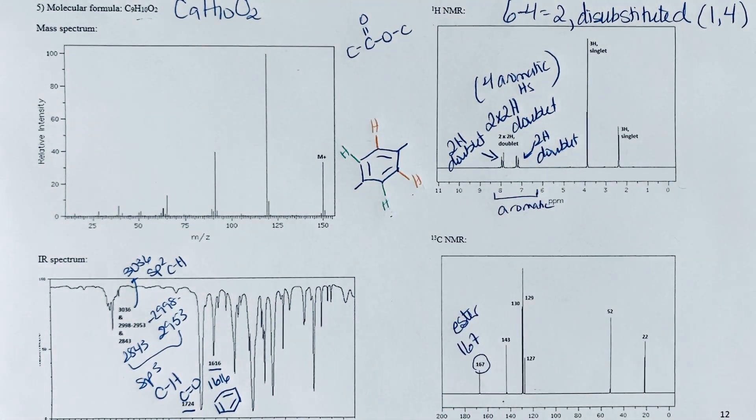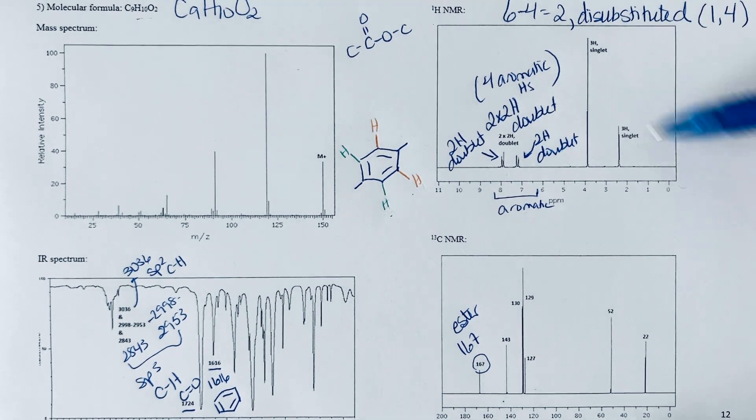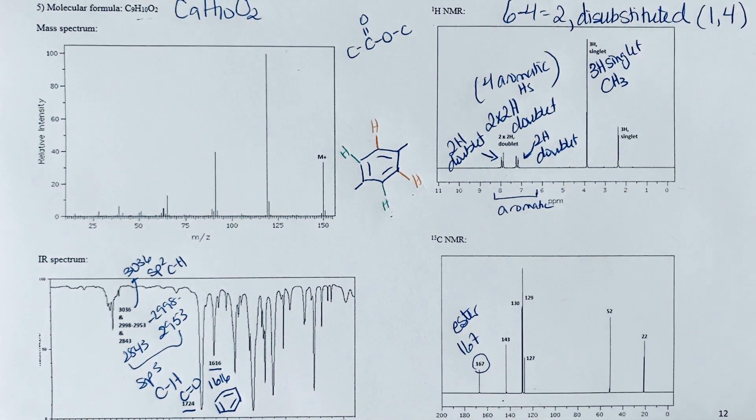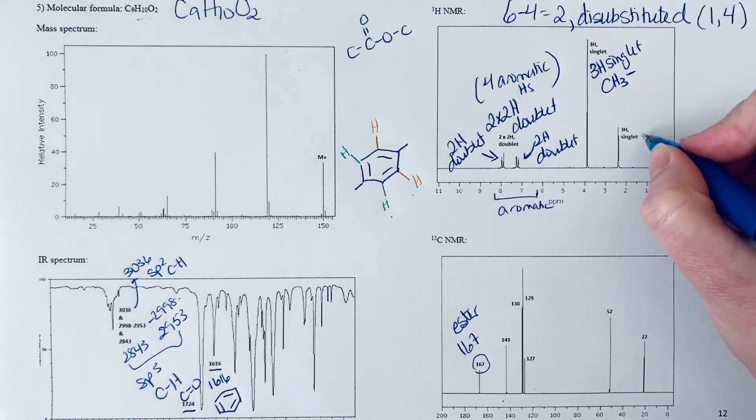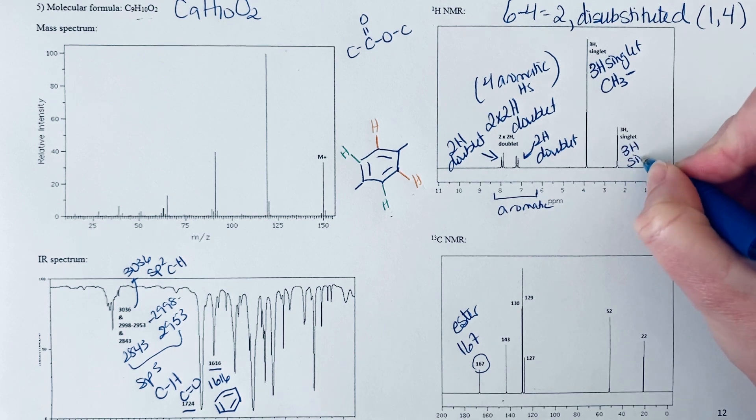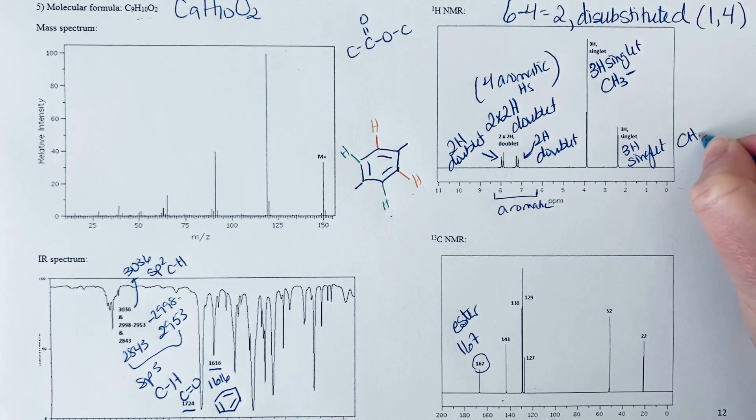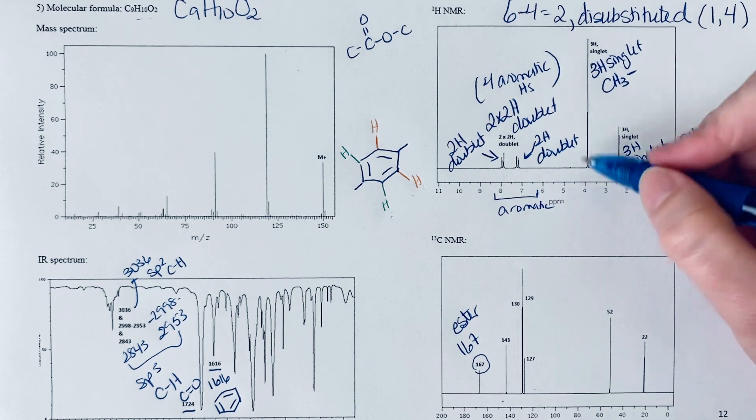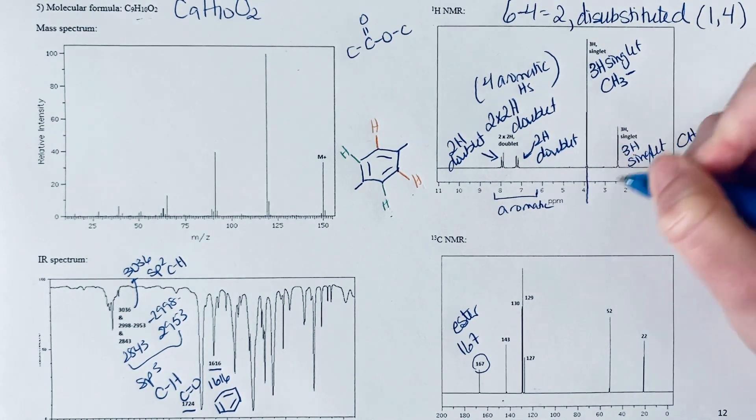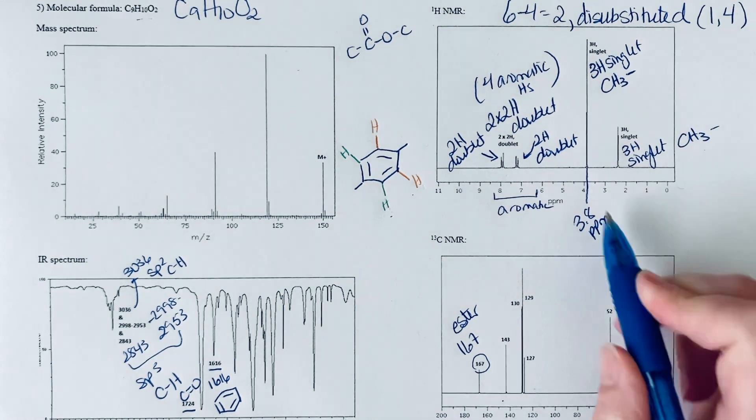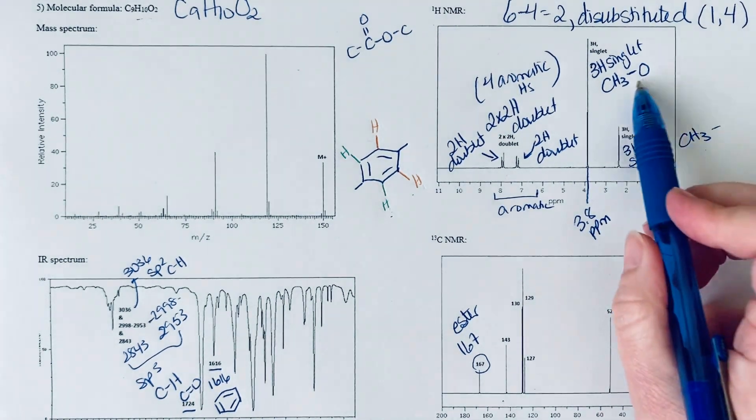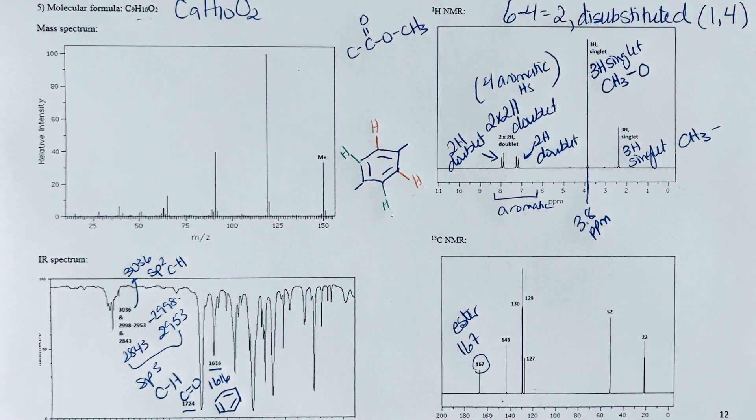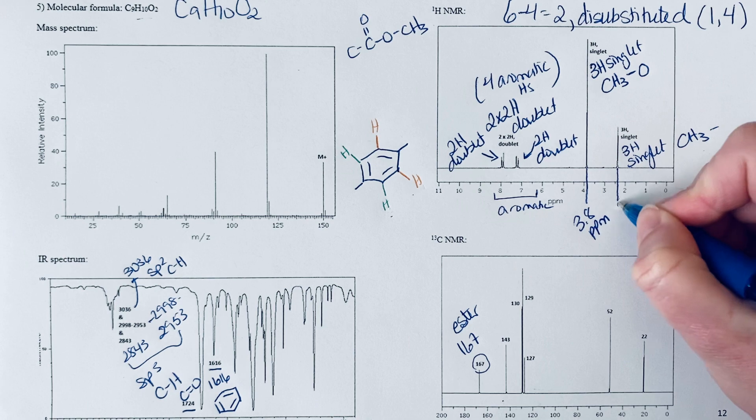Let's look at the other two peaks. We have a three hydrogen singlet—a CH3 that has no neighbors—and we've got another CH3 three hydrogen singlet. These are clearly going to be part of the substituents on the ring. This first signal, we take a look at the parts per million, the chemical shift—it looks like it's about 3.8 ppm. That tells me that this one is attached to oxygen, so that would be the oxygen of the ester.